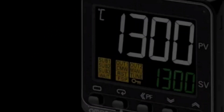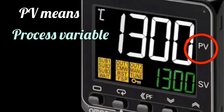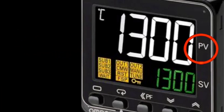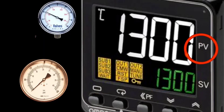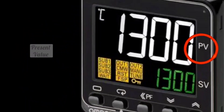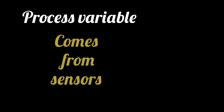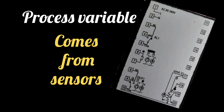PV means process variable, or process value. This is the present value of pressure, temperature, or whatever has to be controlled. The process variable is obtained from sensors, and sensors are connected according to the connection diagram in the PID controller.